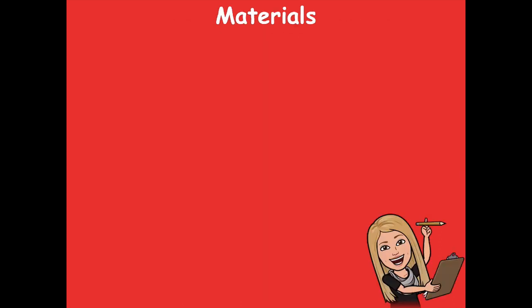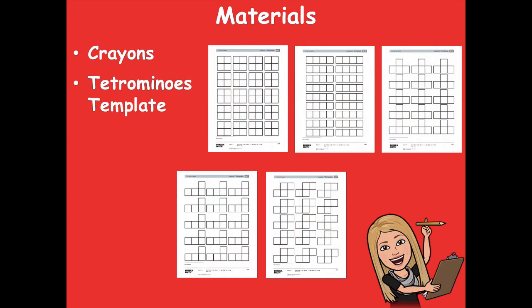You're probably thinking, what are those? Don't worry, we're going to talk about it. The materials you'll need for this lesson are some crayons and the tetrominoes template. Those are in your math book or in the module. If you do not have these, that is okay — you can make your own. They have to be in the shapes that you see in the problem set.